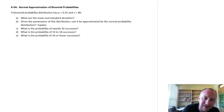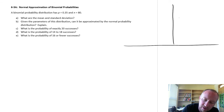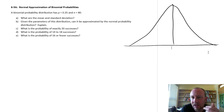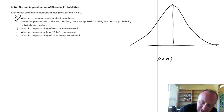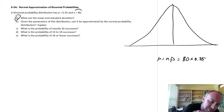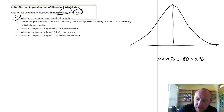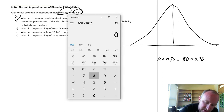Let's first figure out the parameters of our distribution. This is a normal distribution, so we need the mean and standard deviation — that's Part A. Our mean, mu, is calculated as the sample size times the proportion: 80 times 0.35, which gives us a mean of 28.